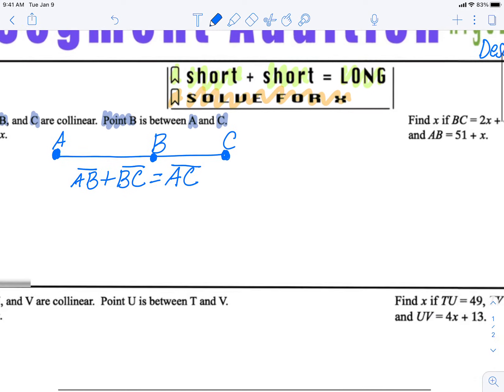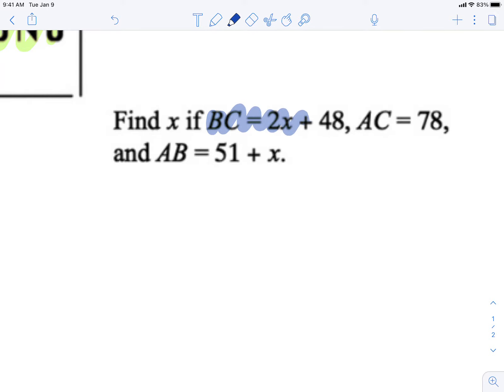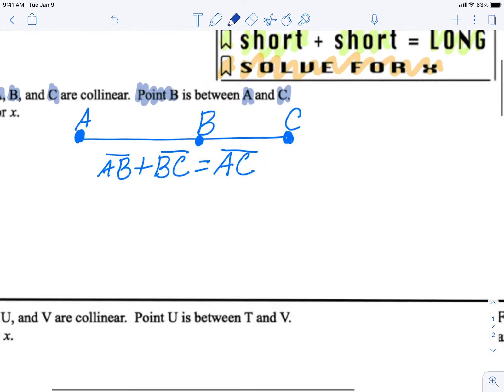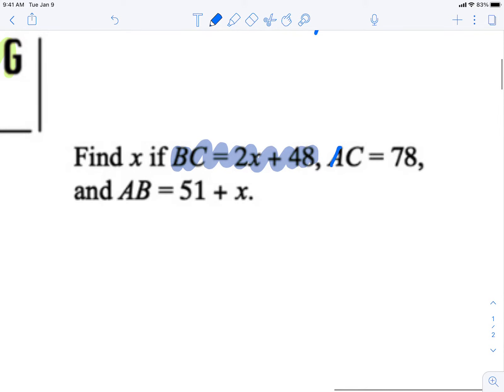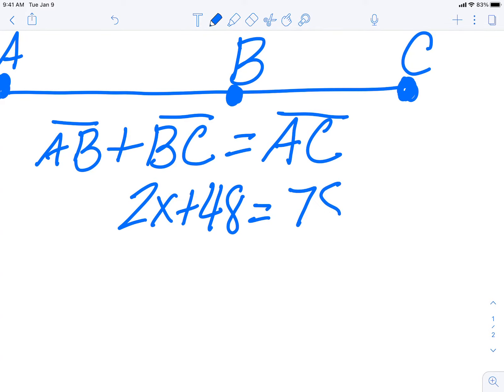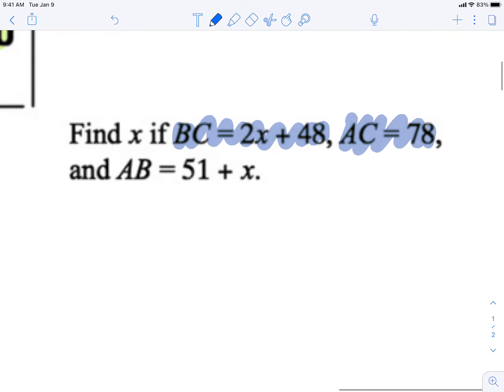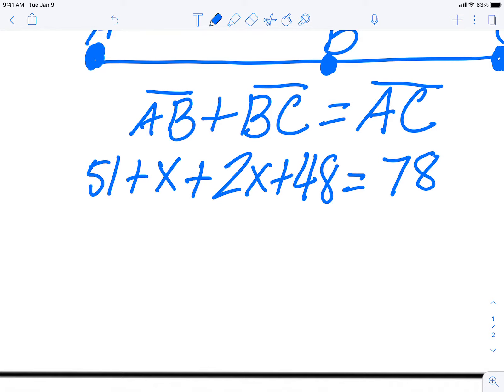So now let's use the information that they give us in the problem to fill that in. It says find x if BC is equal to 2x plus 48. Well, where's BC? There it is, 2x plus 48. What else do we have? AC is equal to 78. Well, AC is the long segment, 78.